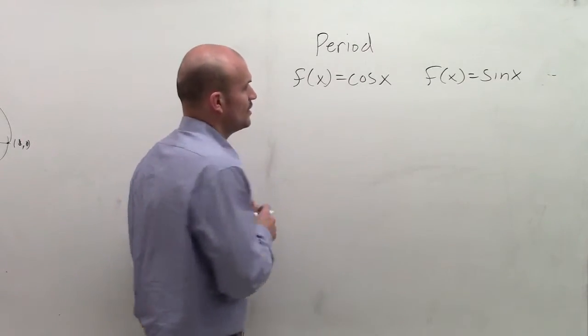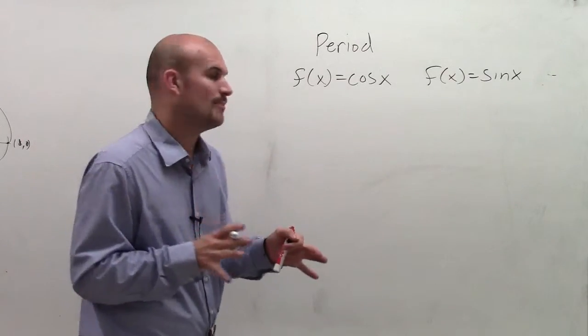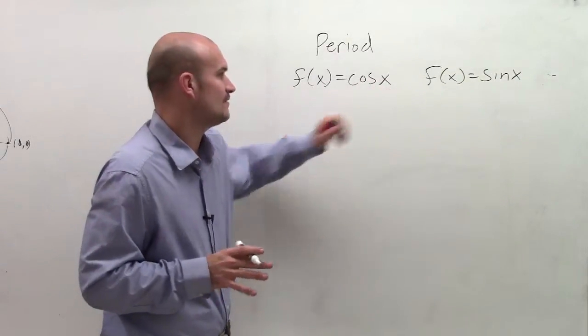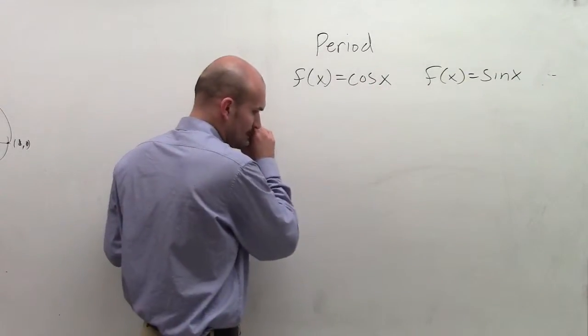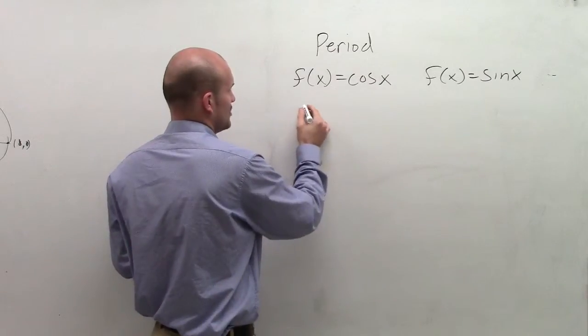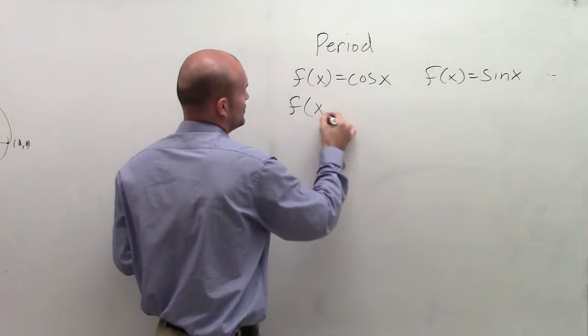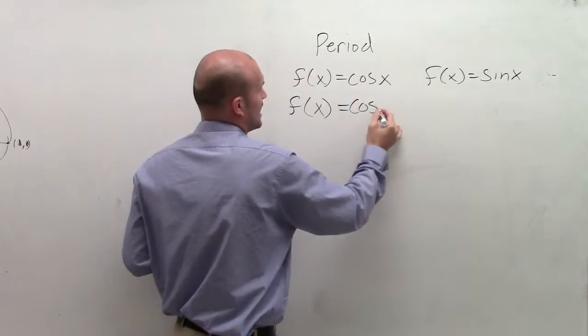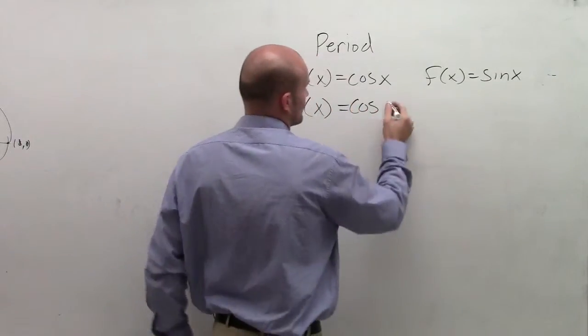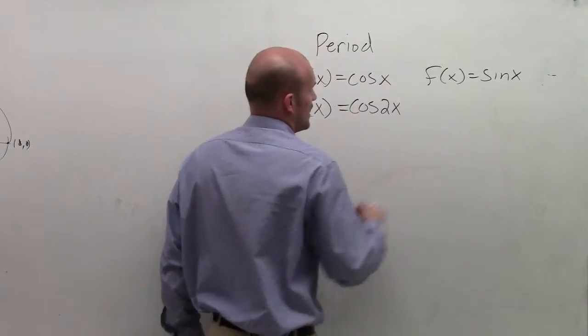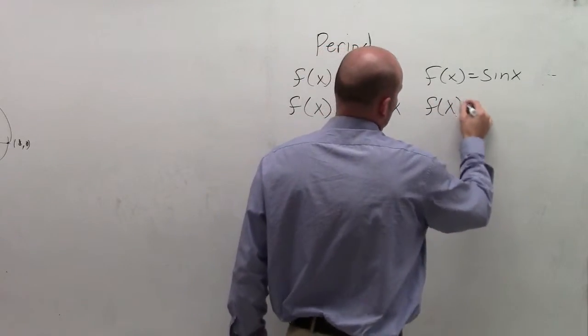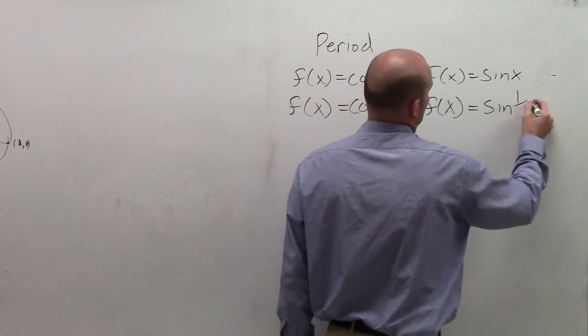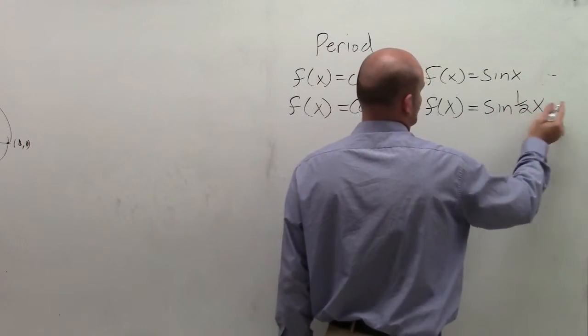The next thing we notice is we can alter our period by multiplying by a number inside of our function. So if I look at two differences, let's say f of x equals cosine of 2x, and then here, let's graph f of x equals sine of 1 half x.